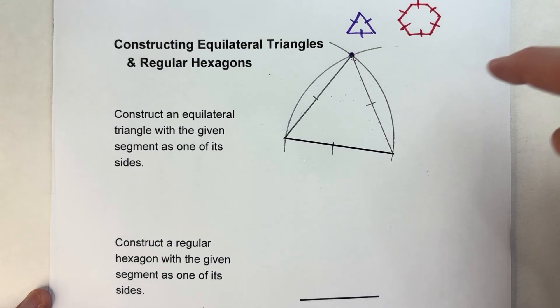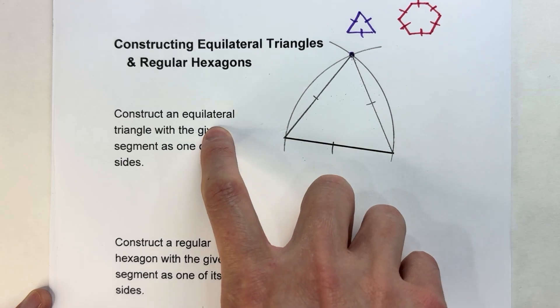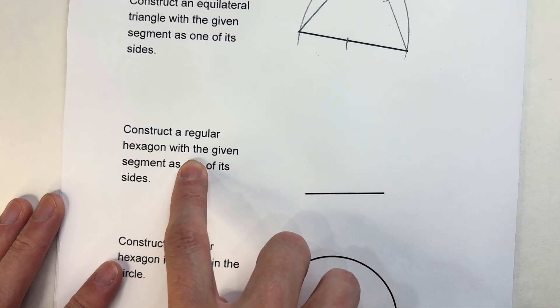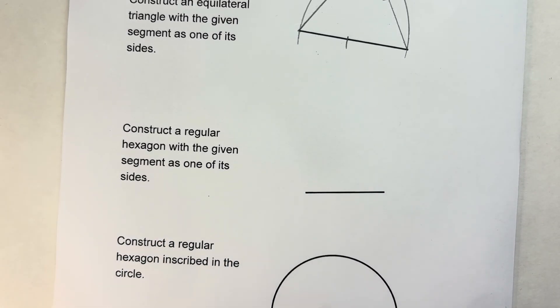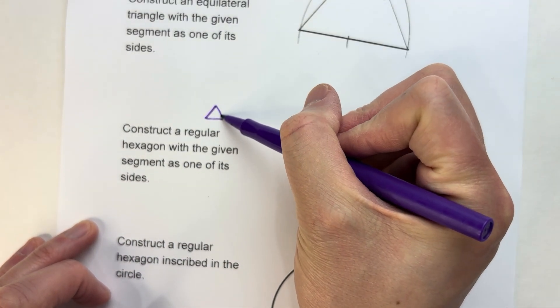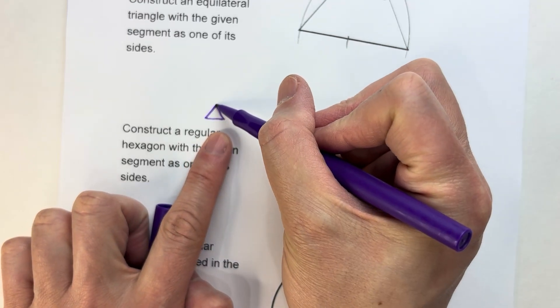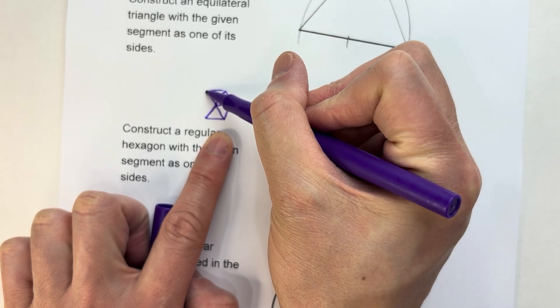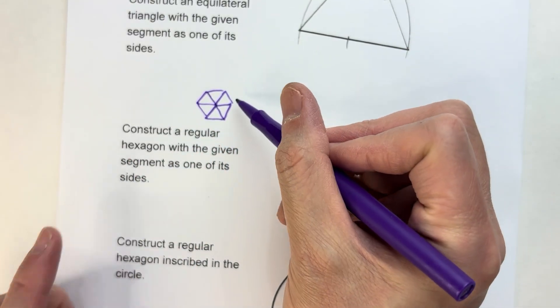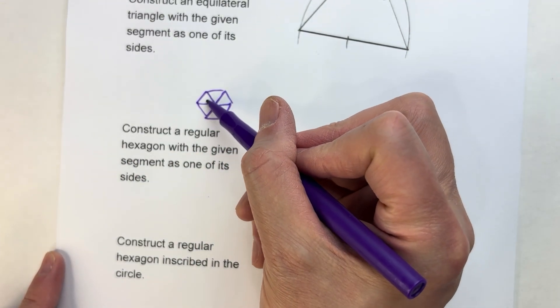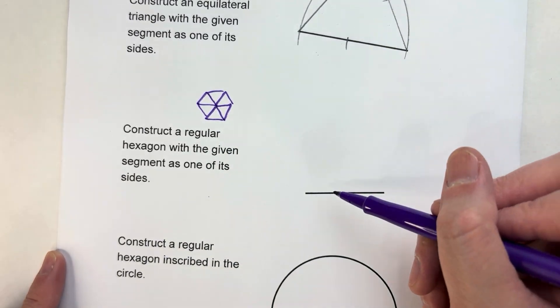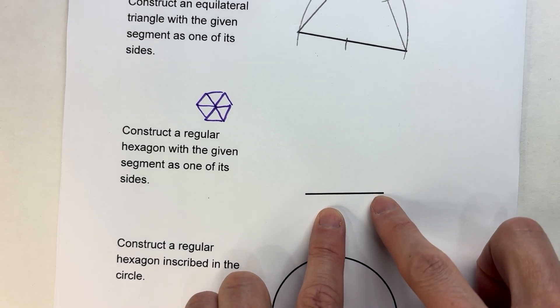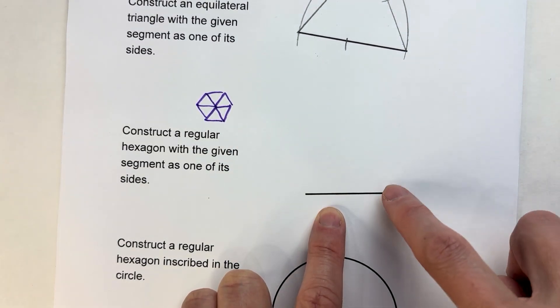Now we can use that same idea of constructing an equilateral triangle to construct a regular hexagon. If I think of an equilateral triangle and just repeat that equilateral triangle six times, it forms a hexagon. So we're basically going to make six triangles all around.